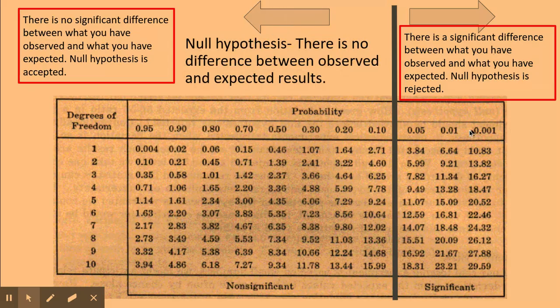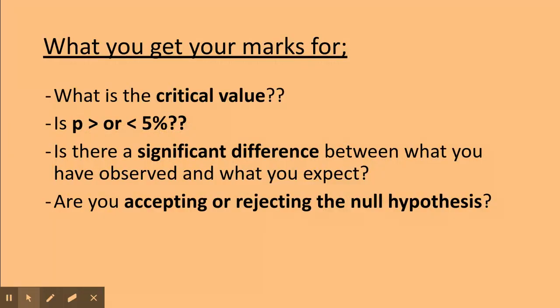If my value of chi-squared lies to this side of the five percent value, then there is a significance between what I've observed and what I've expected, and the null hypothesis is rejected. Now really important here: in your conclusions you always get marks for these four points, so it is well worth making sure that you've got all these four points in there when you make conclusions.